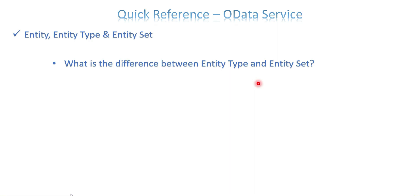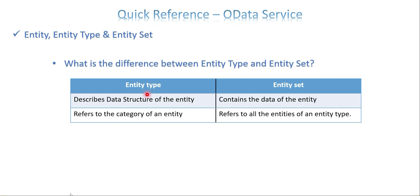What is the difference between entity type and entity set? Entity type describes the data structure of the entity, while entity set contains the data of the entity. Entity type refers to the category of an entity, whereas entity set refers to all the entities of a particular entity type. These are the two key differences. Once you understand entity type and entity set, you can define additional differences as well.